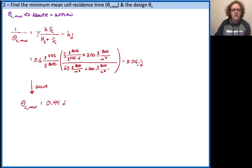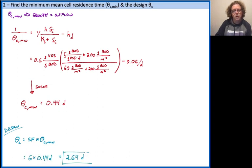And when we go ahead and solve this out, we get a minimum mean cell residence time of about 0.44 days. And using our design safety factor of 6, we can go ahead and multiply that by 6 and get a value of 2.64 days as the mean cell residence time that we'll design for in this problem.